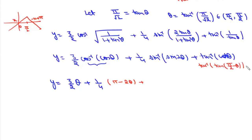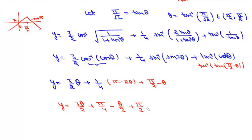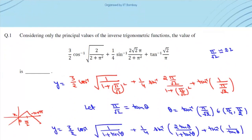Combining all terms: y = (3/2)θ + (1/4)(π − 2θ) + (π/2 − θ) = (3θ/2) + π/4 − θ/2 + π/2 − θ. The θ terms cancel: (3/2 − 1/2 − 1)θ = 0, leaving y = π/4 + π/2 = 3π/4. So the answer to this first question is 3π/4, which numerically is approximately 2.36.